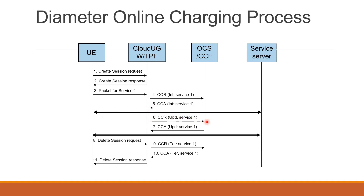OCS checks if quota is available and sends back the refreshed quota, which is saved in the UGW. Looking at the traces more closely: in the CCR initial, actual quota communication does not take place. The CCR initial is basically to check with OCS whether this user is subscribed and provisioned in OCS with proper provisioning for data services. So the CCR/CCA initial exchange does not give you any quota — it only gives you a diameter success indicating to the UGW that the user is allowed for data services.